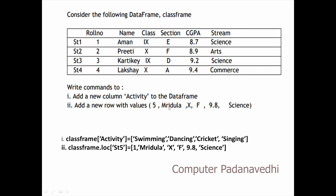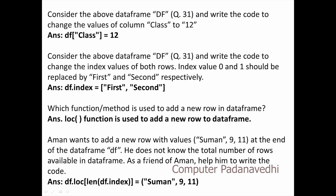New row with value 5. So, if you click the class frame, df.loc['st5'] is equal to 1. We will name the subject as science. We will update the class frame.